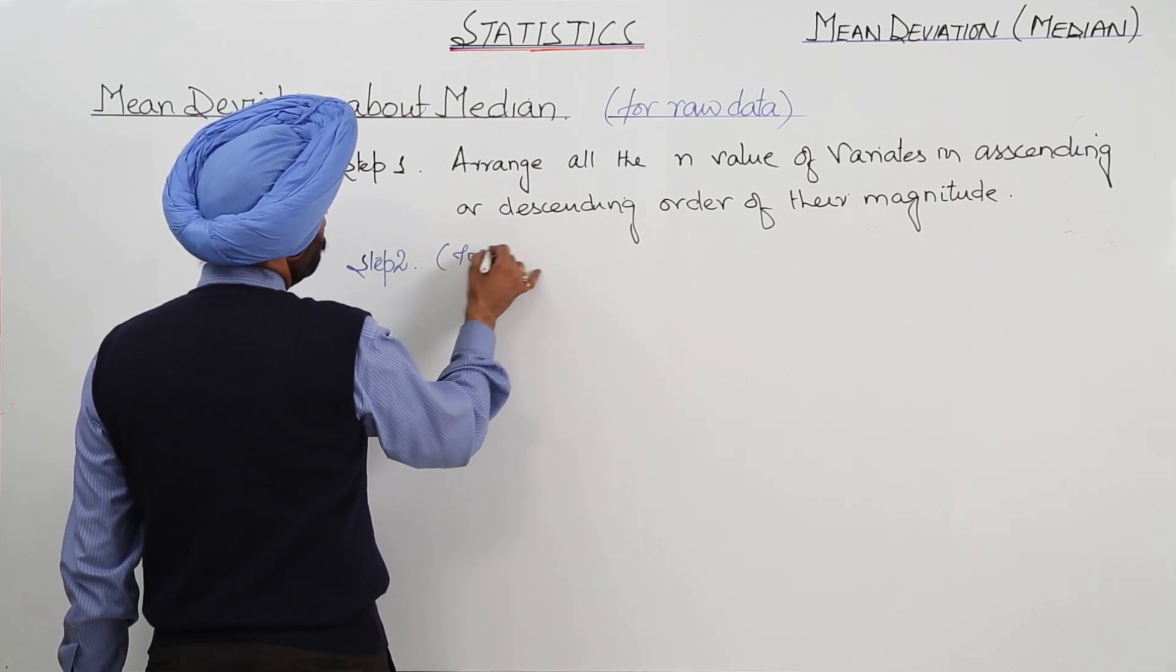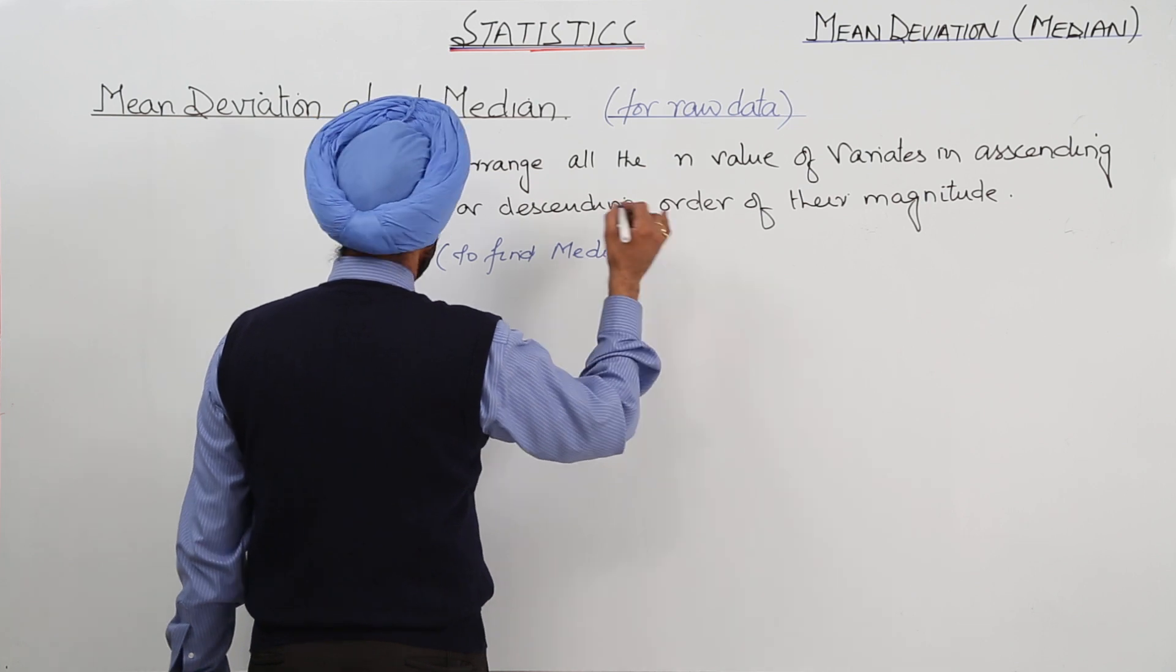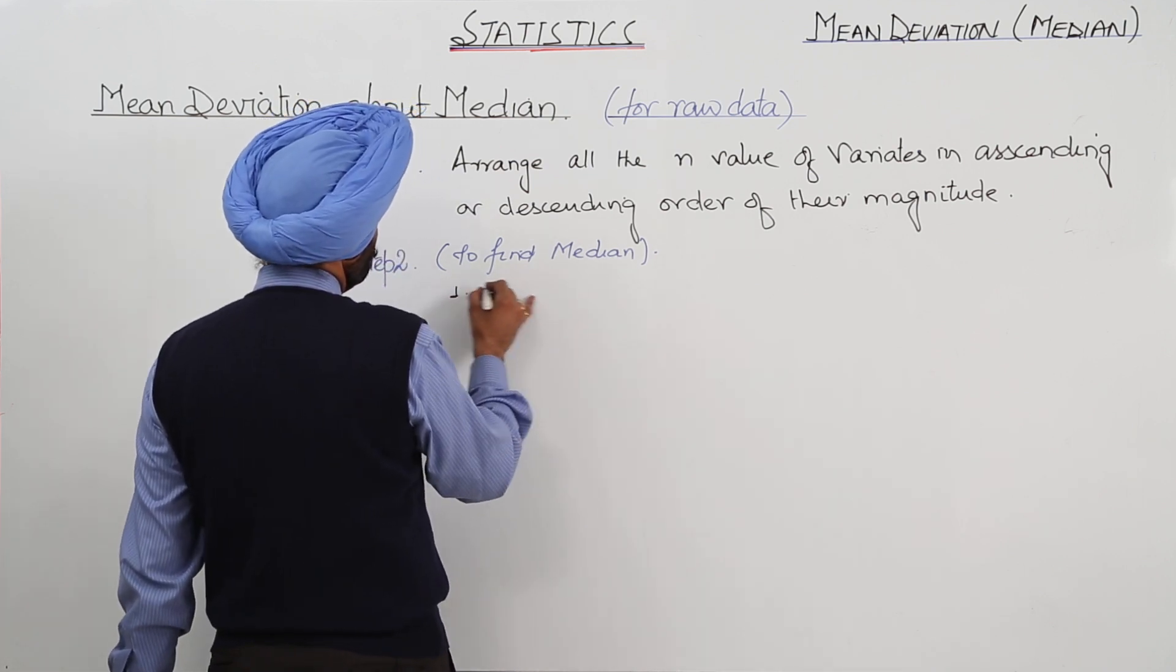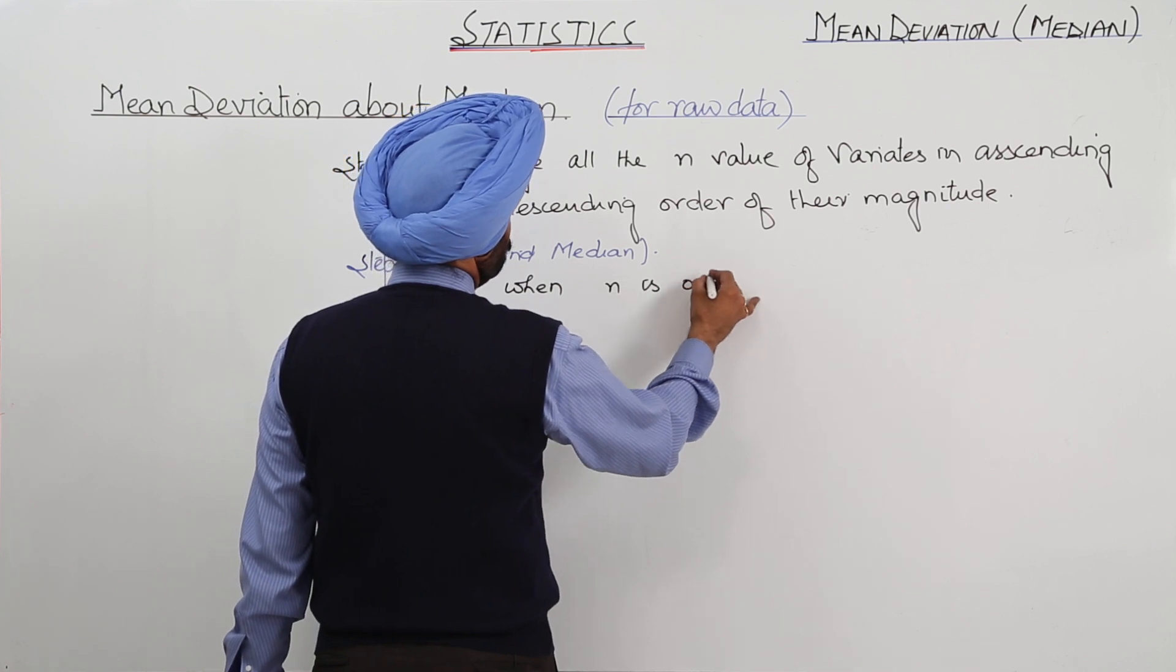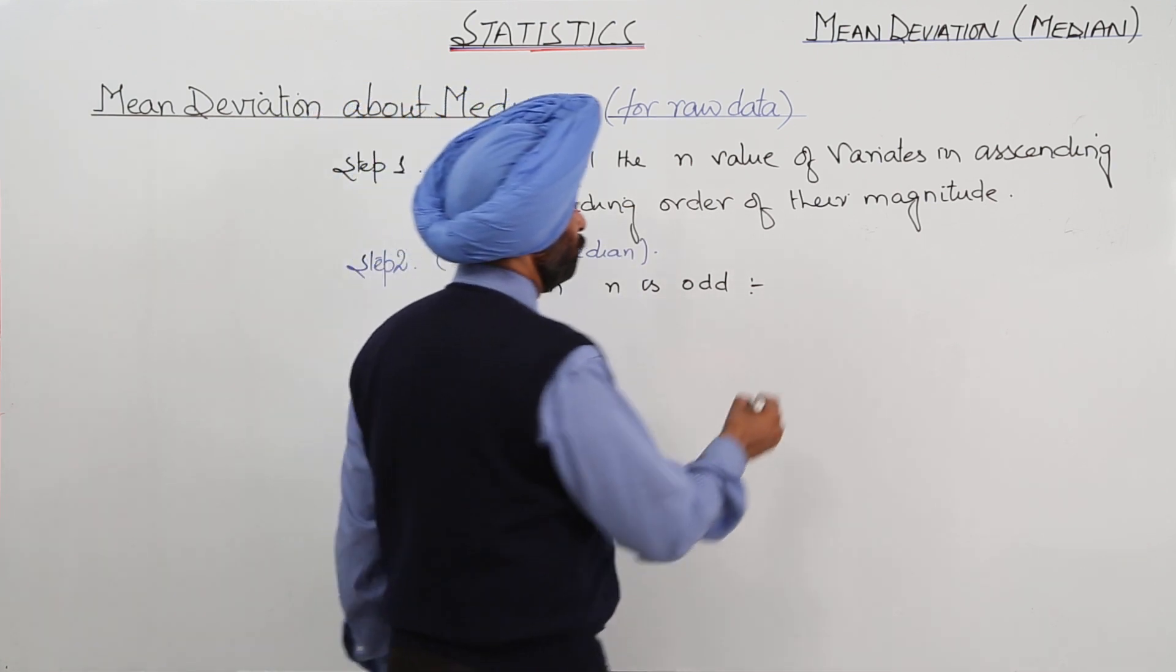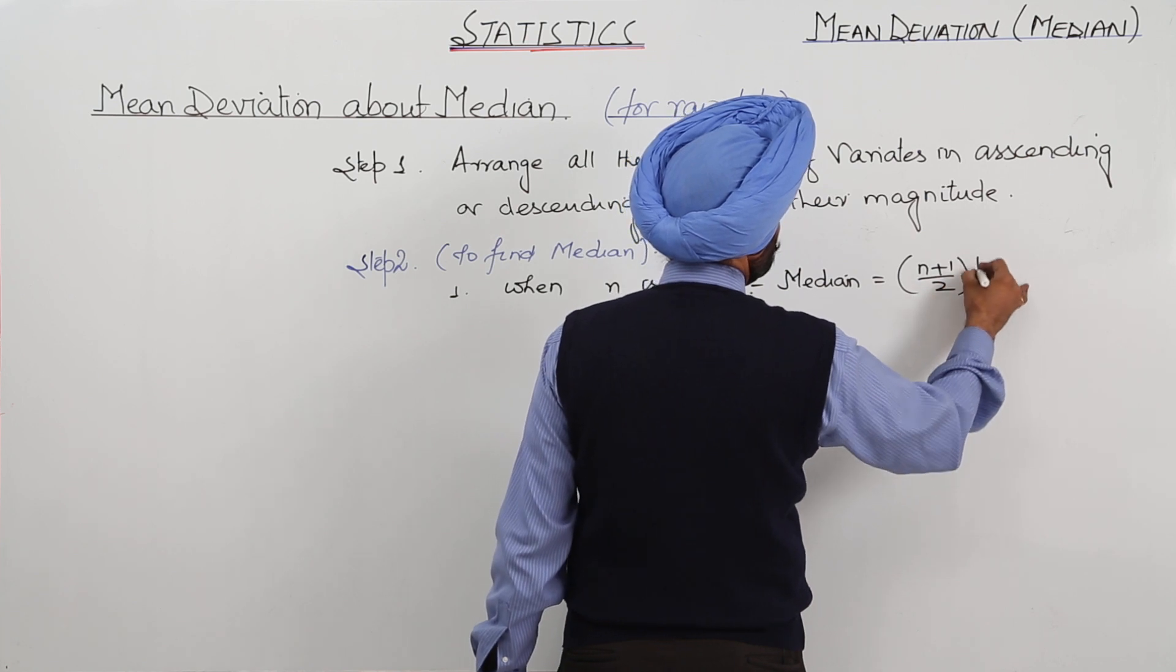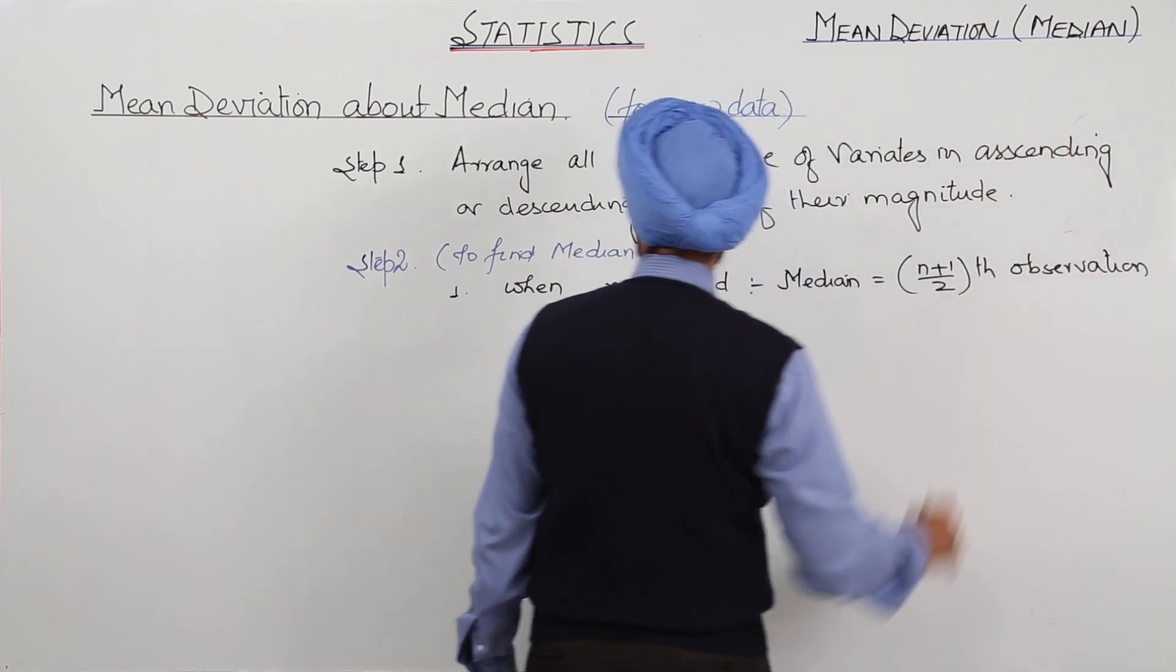Step 2 to find the median. Here, two conditions arise. Number one is when n is odd. When n is odd, then what is median? Median is equal to n plus 1 upon 2th observation. This is the median.